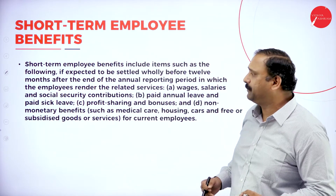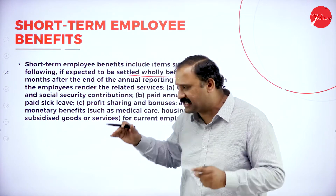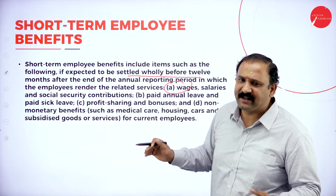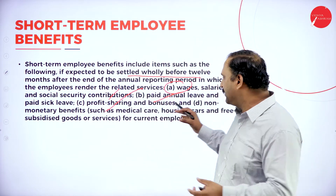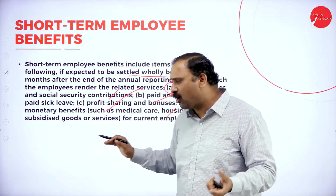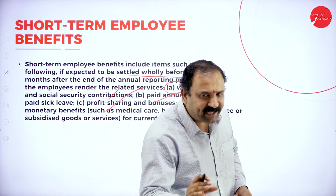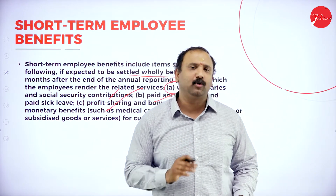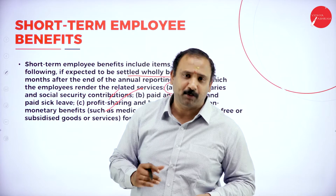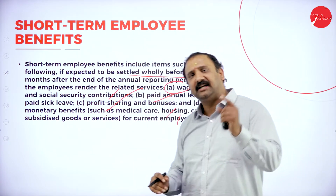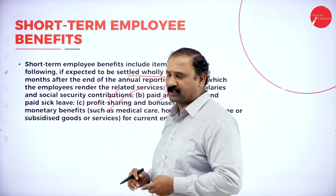The short-term employee benefit plan includes all benefits expected to be settled within 12 months, including wages, social security contributions, annual paid leave, profit sharing, medical care, housing, car, free or subsidized goods, and any other immediate benefits given. These things have to be recognized immediately by the company and published in the books of accounts, because these are all expenses for the company rather than money to put back into their own account. Every single employee contributing to the development of the organization is definitely an expense for the organization.